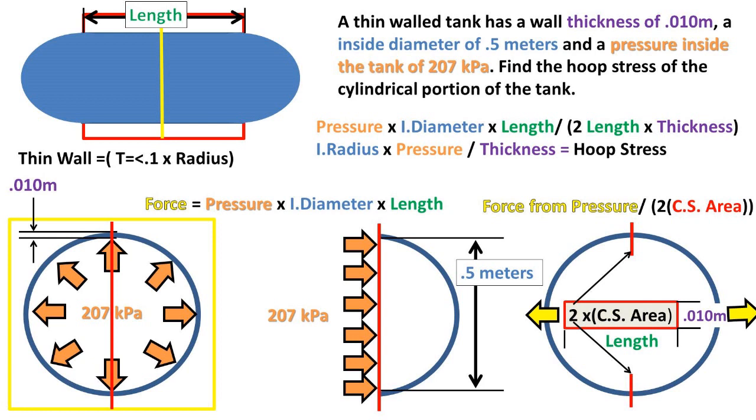Now we can plug in our internal radius of 0.25 meters, our internal pressure of 207 kilopascals gauge, and our thickness of our pressure vessel of 0.01 meters.